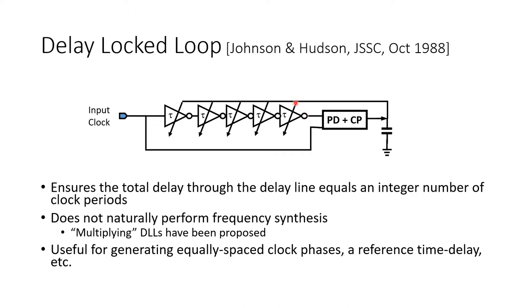And assuming these delay stages are matched, it produces evenly spaced in time copies of the input evenly spread across an integer number of clock periods. We say that this simple DLL will lock at an integer number of clock periods because if the loop is stable, the assumption is that the input to the phase detector here would be zero.